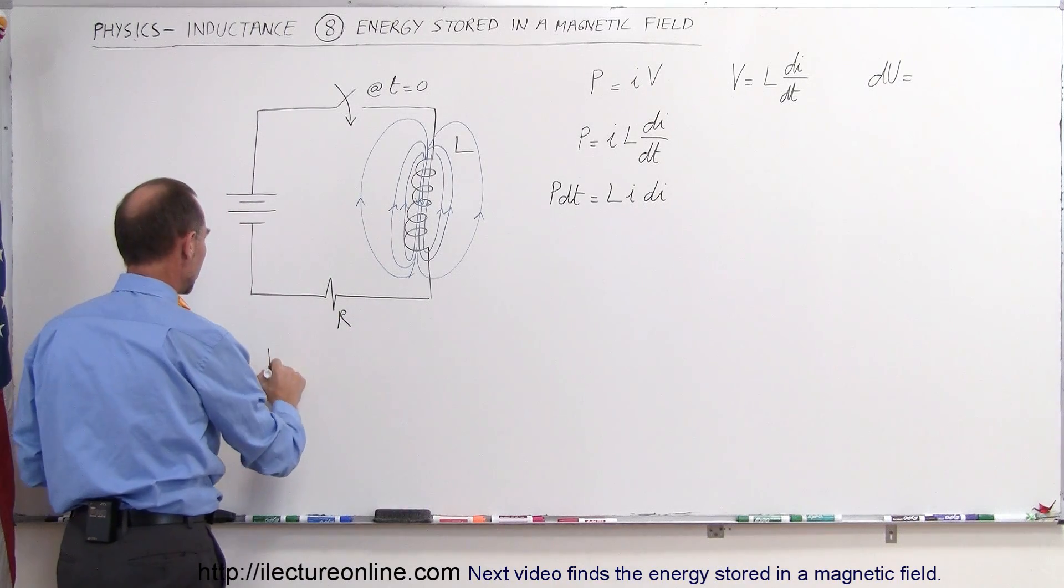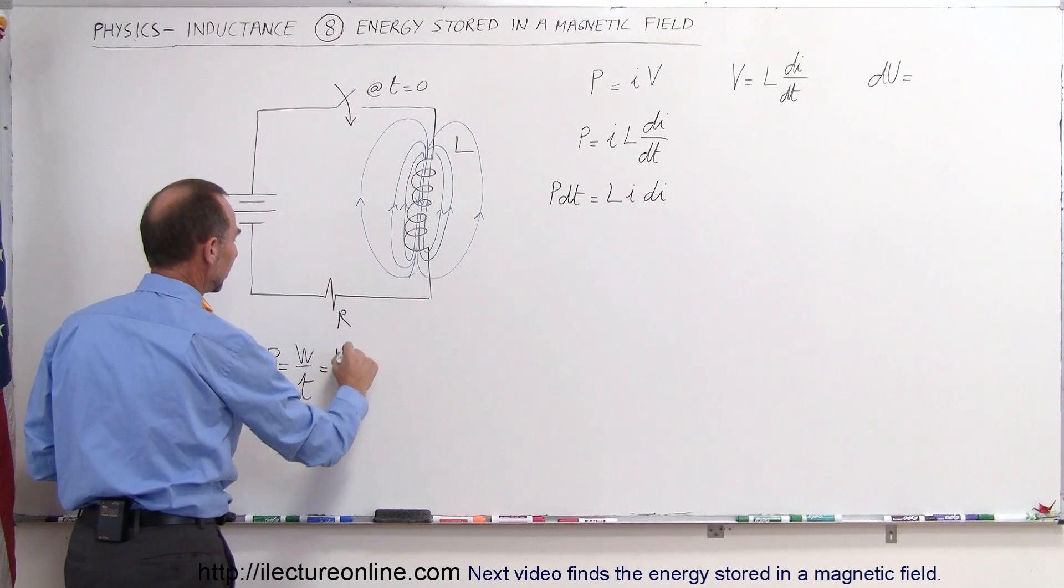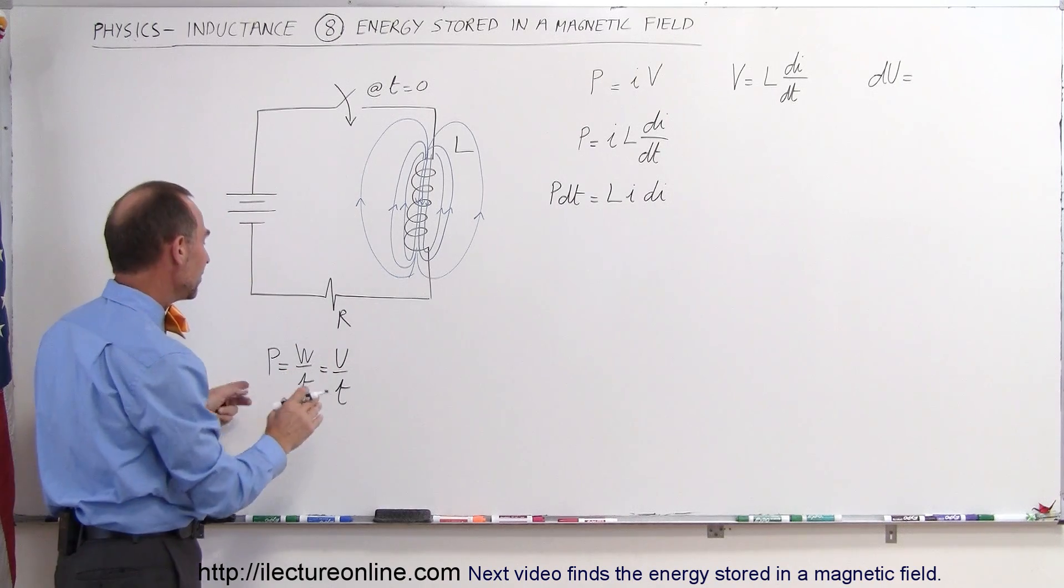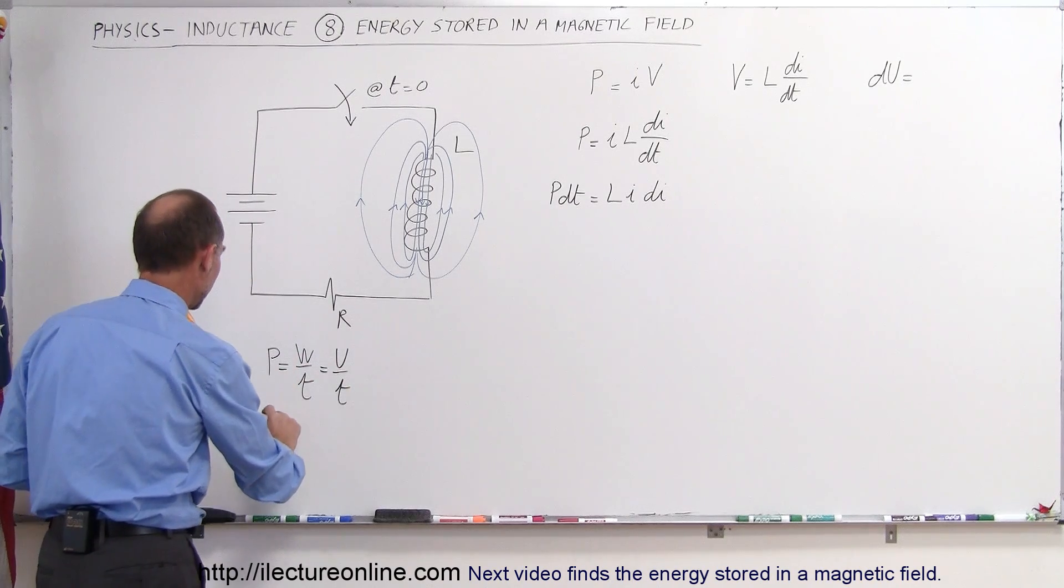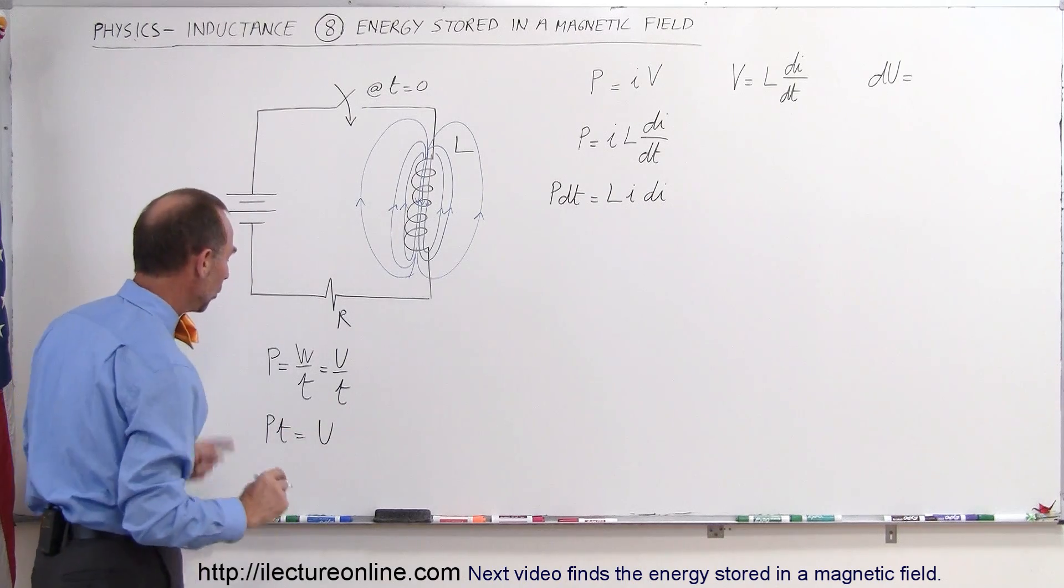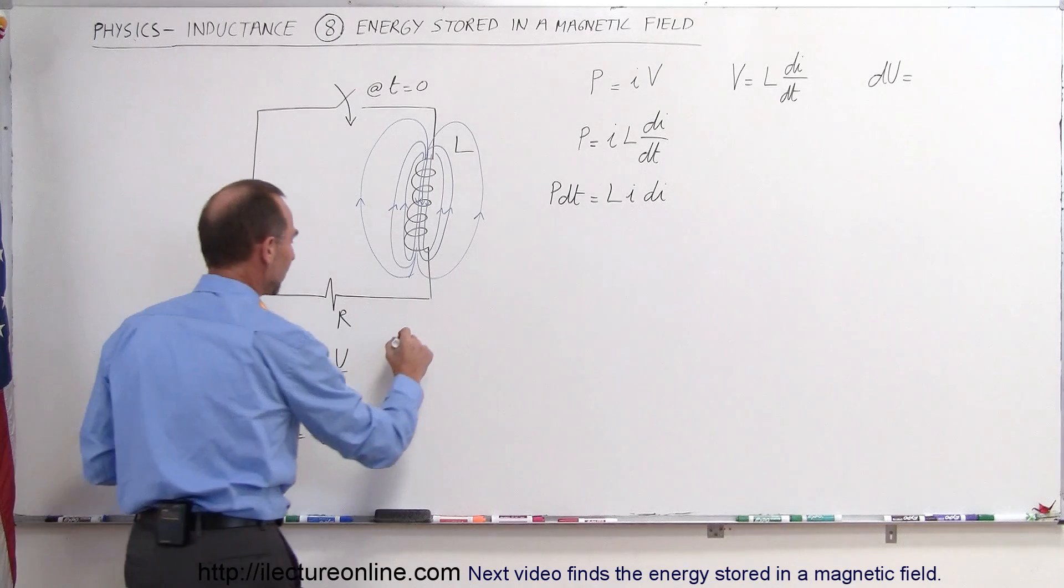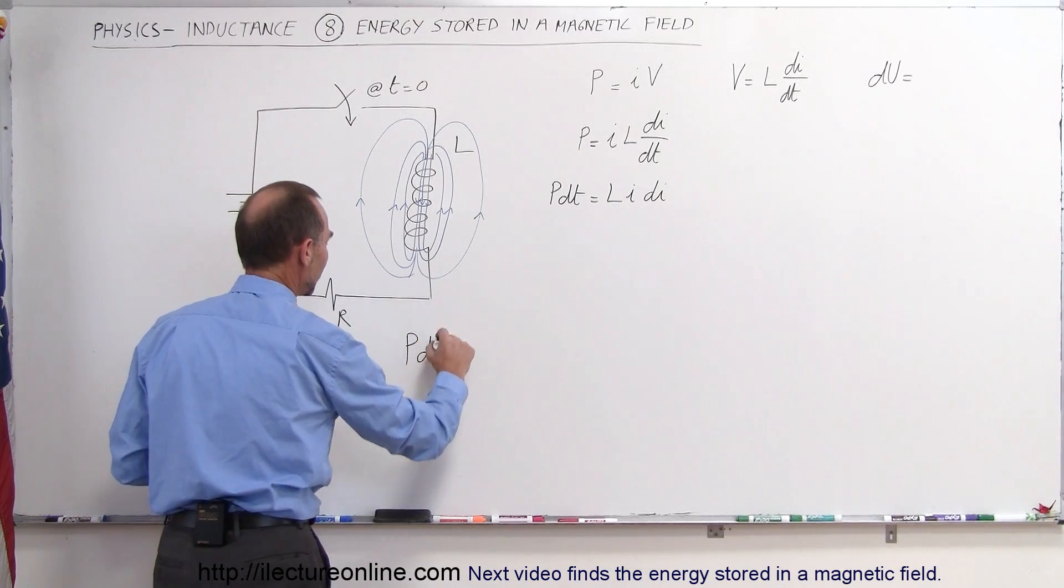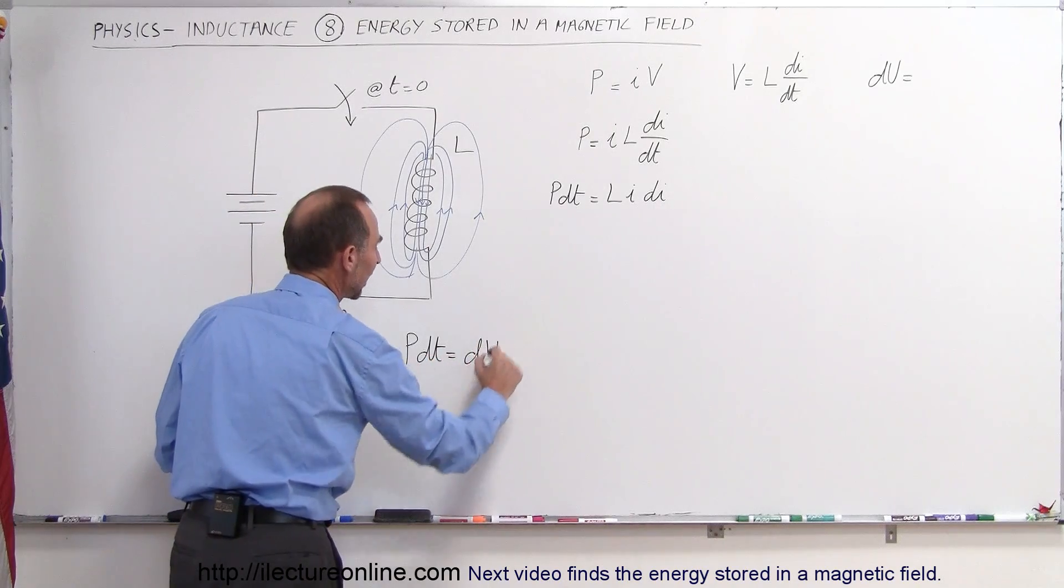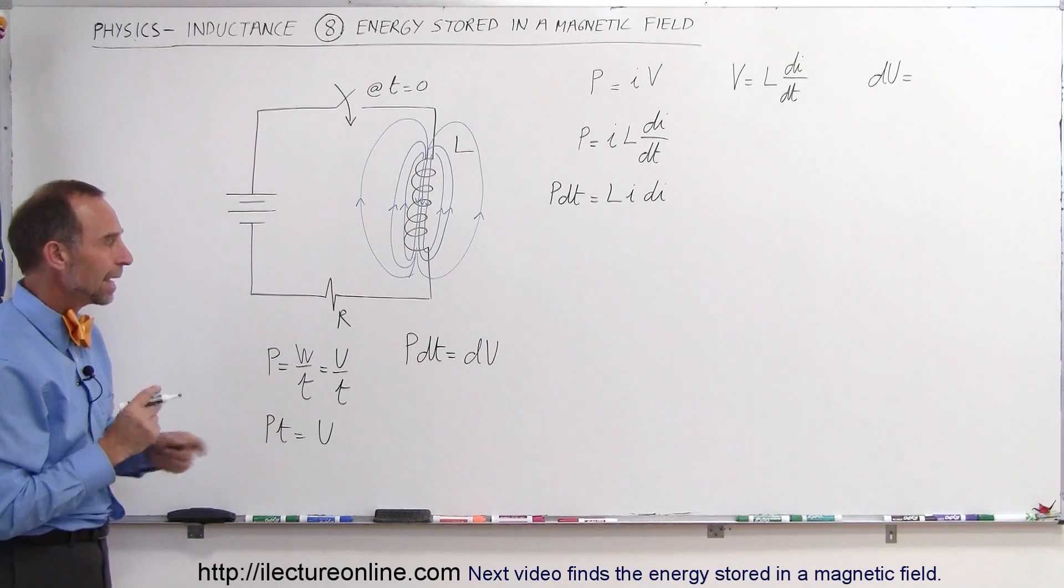Let me write it here. The definition of power is equal to work divided by time, which is also equal to the energy divided by time, which means if I take the t and bring it up here, I can say that the power times the time is equal to the energy supplied. Or, if I want to do it in small increments, I can say that the power times a very small time increment is equal to the small amount of energy supplied to the magnetic field or to the solenoid.